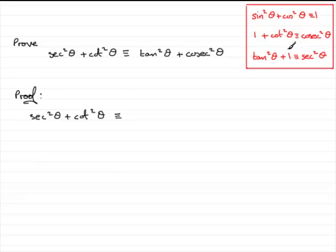And this is a fairly straightforward example because all you've got to do is take the sec squared theta and you can see that sec squared theta is identical to tan squared theta plus 1. So we could write that in place of sec squared theta. That is tan squared theta plus 1.